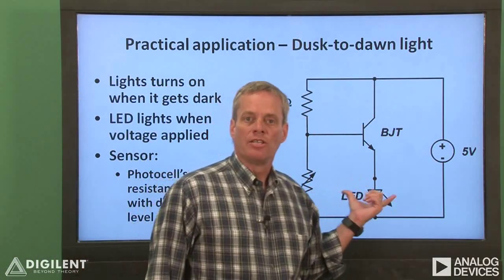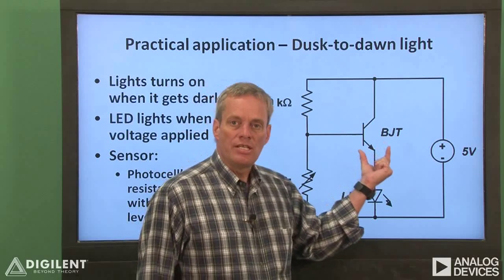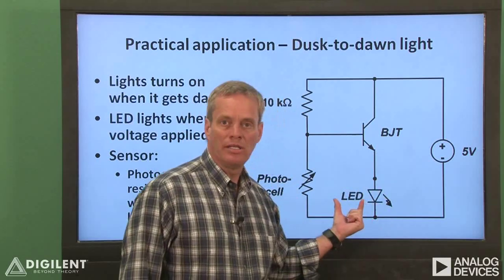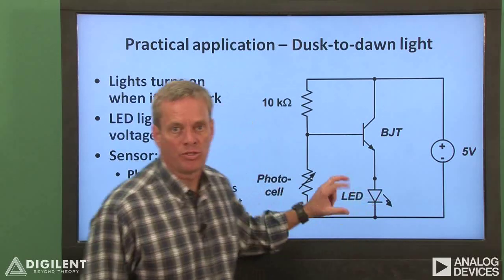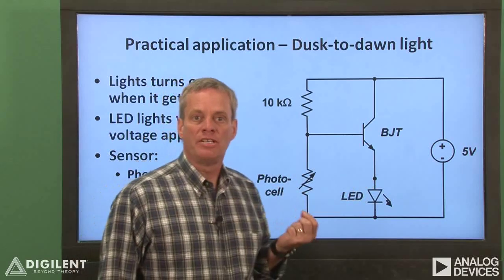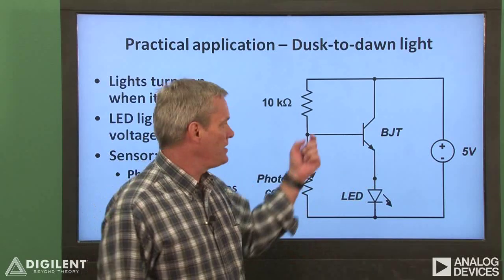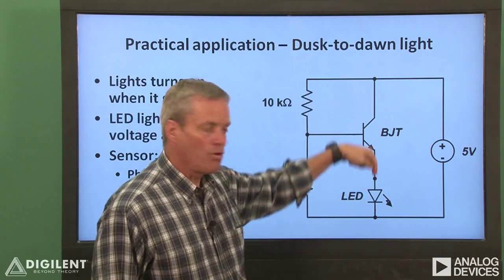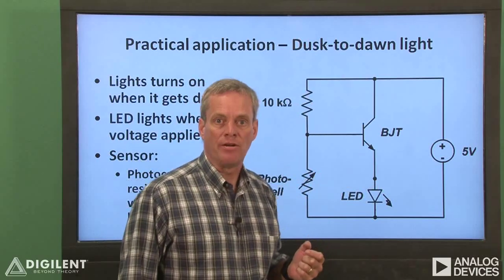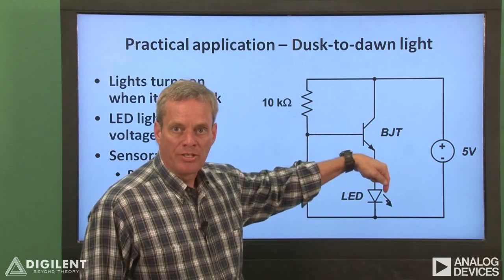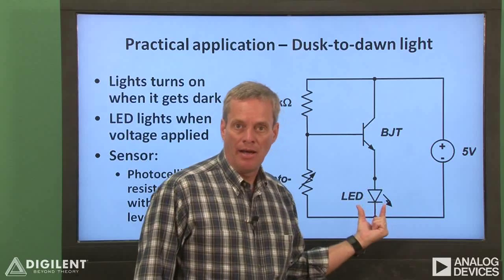Here's a schematic of our dusk-to-dawn circuit. We're using a BJT as a switch to provide power to a light-emitting diode, or LED. LEDs light up when a high enough voltage — two volts or so — is applied across their terminals. As we saw in our dependent sources video, if the base voltage of the BJT is low, the BJT will not flow current from the collector to the emitter. If the base voltage is high, current will flow from the collector to the emitter and the diode can light up.